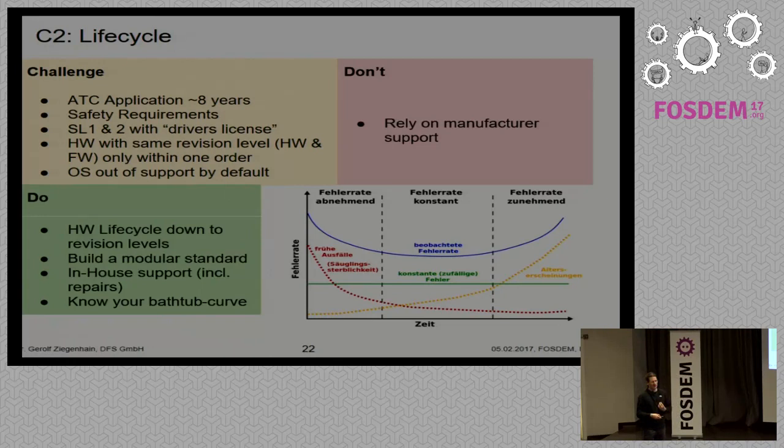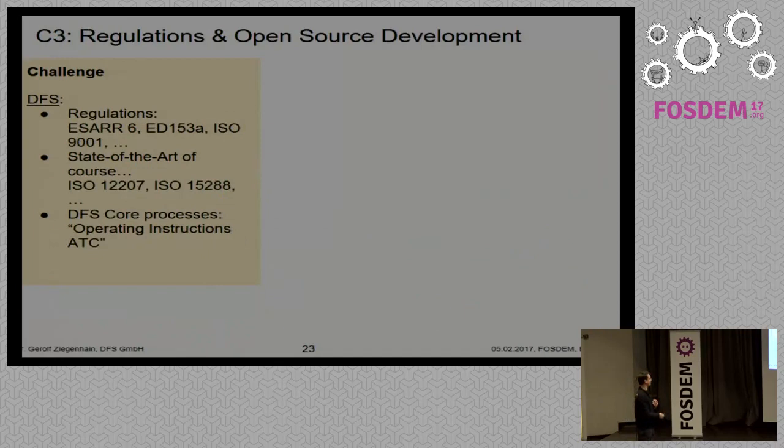The second thing you really want to do is create a modular standard, including managing repairs. For example, if you know that the diodes on Nvidia graphics cards at the graphics port break regularly, it's better to take all the graphics cards, solder them out, and replace them with better ones. You need deep knowledge about your systems at that level. And to avoid building a big stock of hardware you never use, you have to know your failure rate and how it evolves over time.